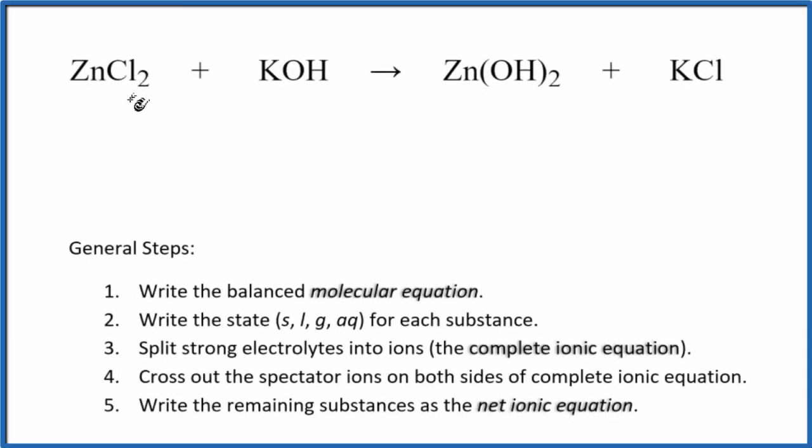In this video, we'll write the balanced net ionic equation for ZnCl2 plus KOH. That's zinc chloride plus potassium hydroxide.